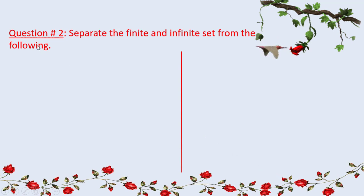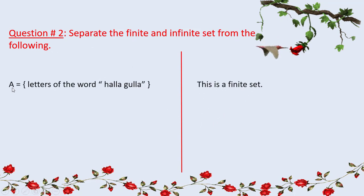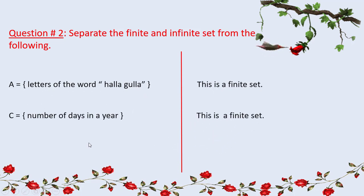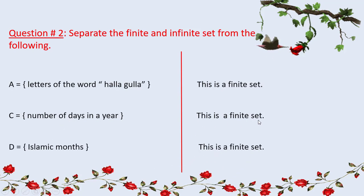Question number 2 asks to separate the finite and infinite sets from the following. A is the set of letters of the word 'Hala Kula' — we can write a finite number of letters, so this is a finite set. C is the set of number of days in a year — there are 365 days, so this is a finite set. D is the set of Islamic months — there are 12 Islamic months, so this is also a finite set.